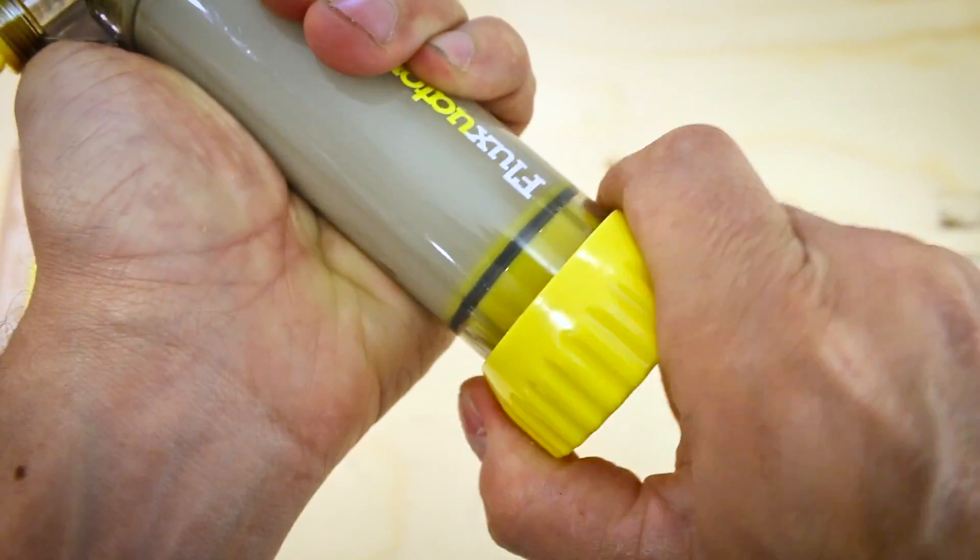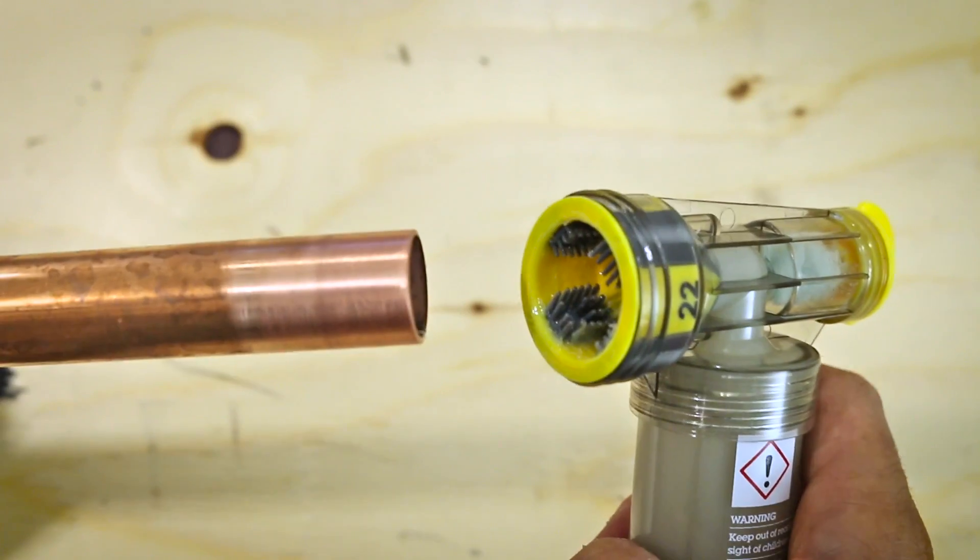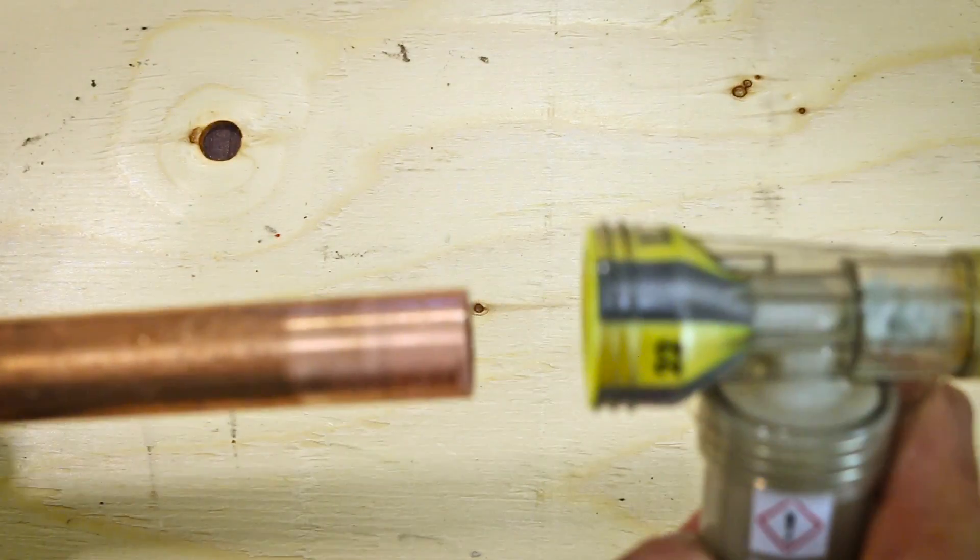As the dial is turned the flux is pushed through the four nozzles and then is ready to be used. All you have to do is insert the pipe, rotate a few turns and you'll have a perfectly fluxed pipe.